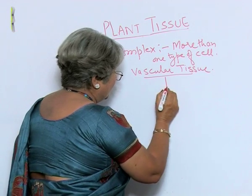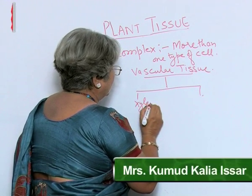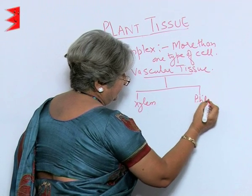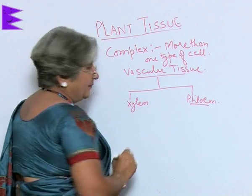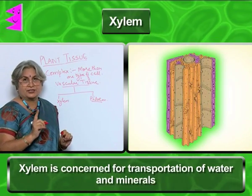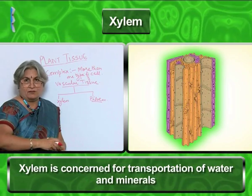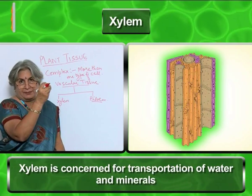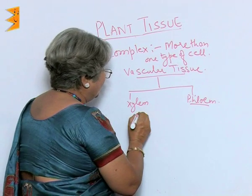Vascular tissue is of two types: xylem and phloem. First, xylem is concerned with transportation of water and minerals. When water has to be transported, naturally it has to be like a long pipe. So there are four types of cells in xylem.